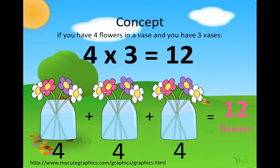This is the same as multiplying 4 and 3 to get 12. You have 3 sets of 4 flowers, so you have 12 flowers total.